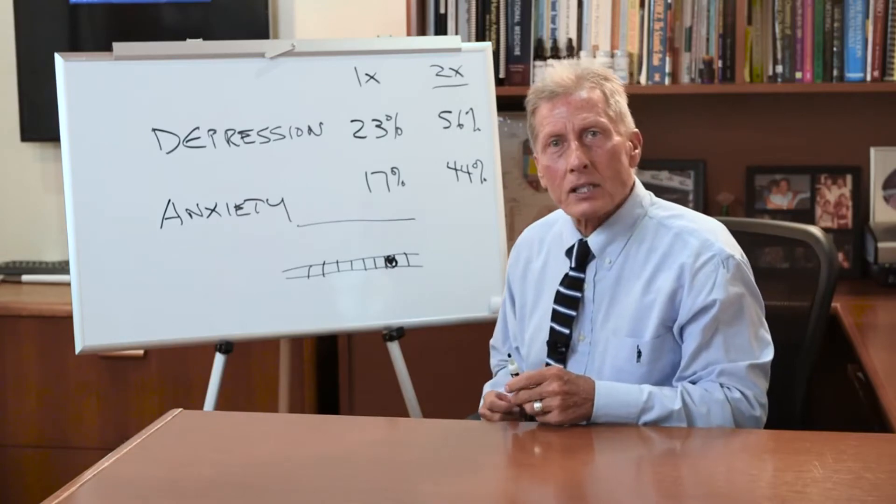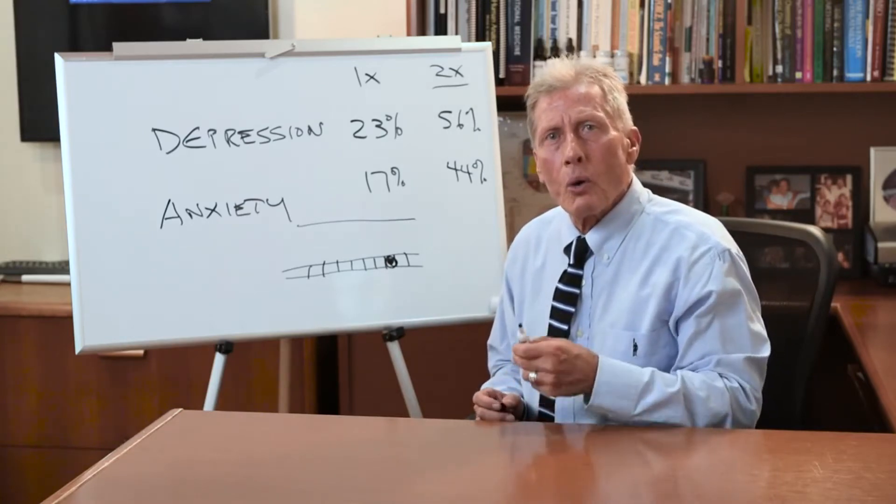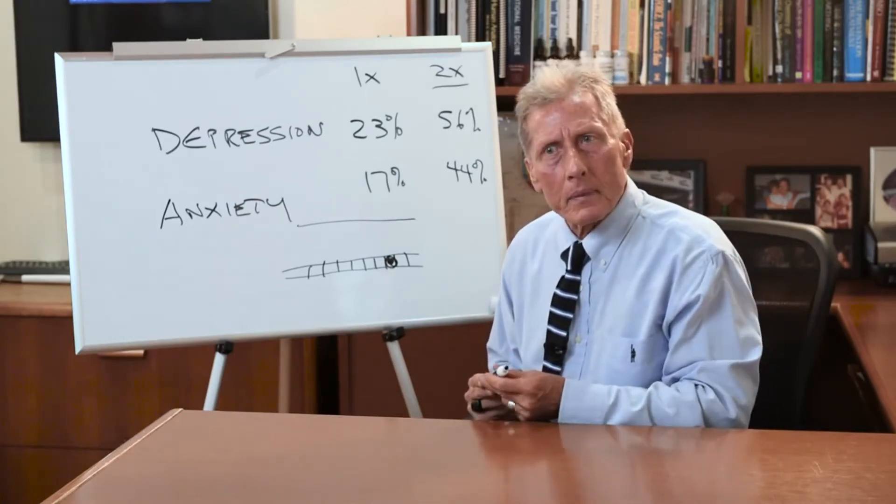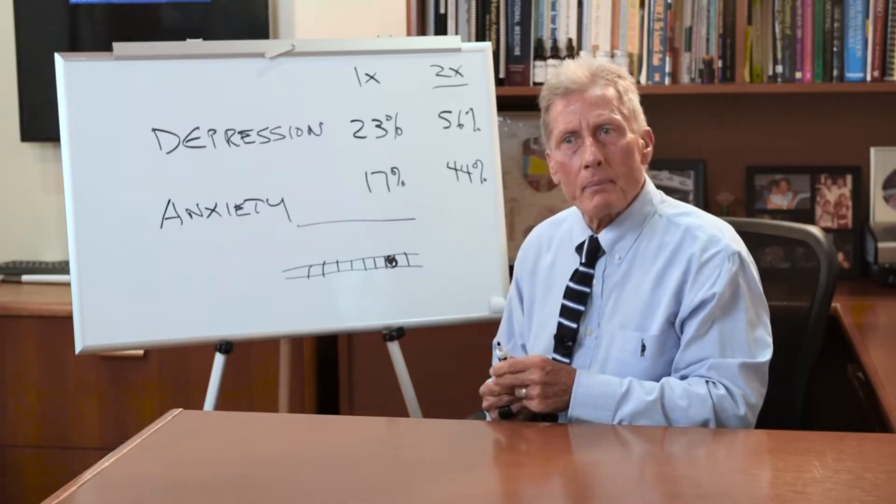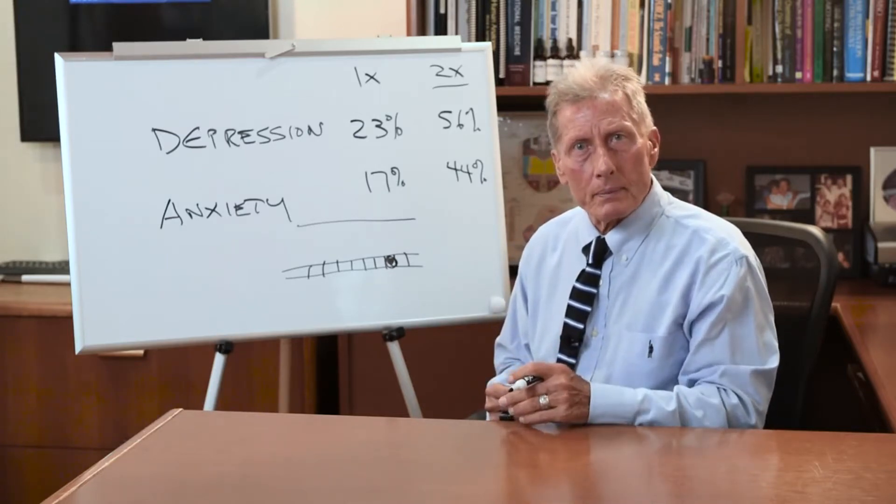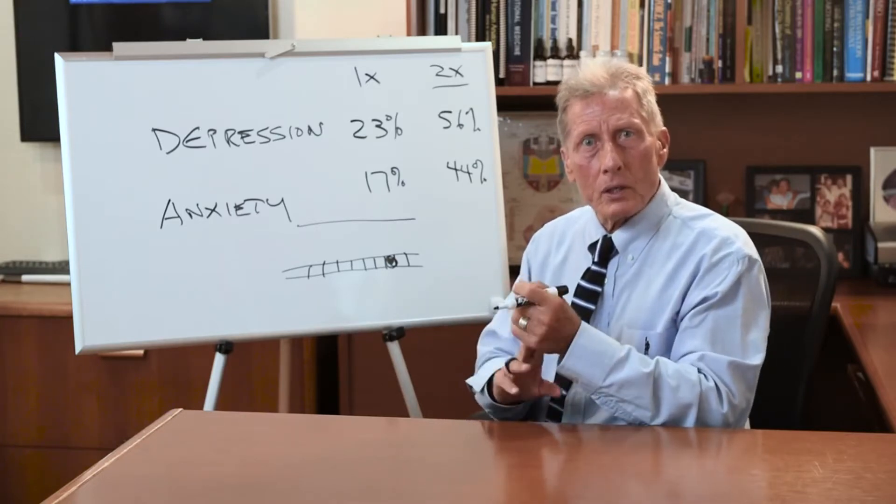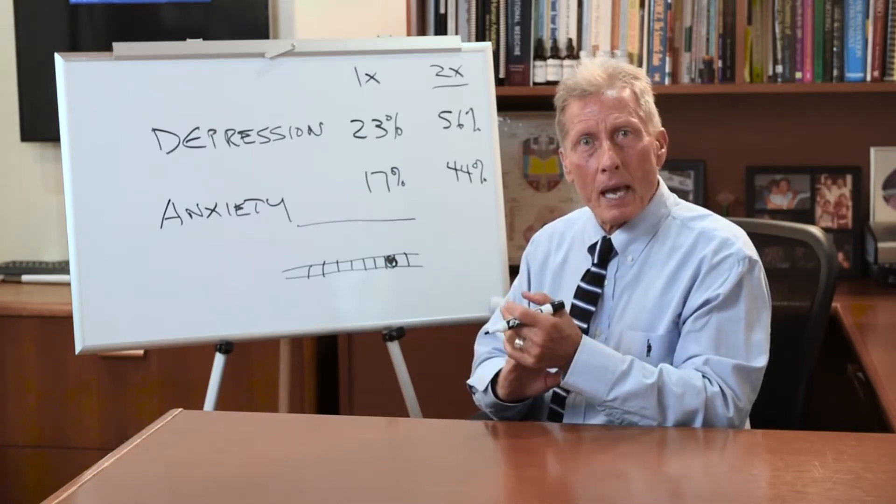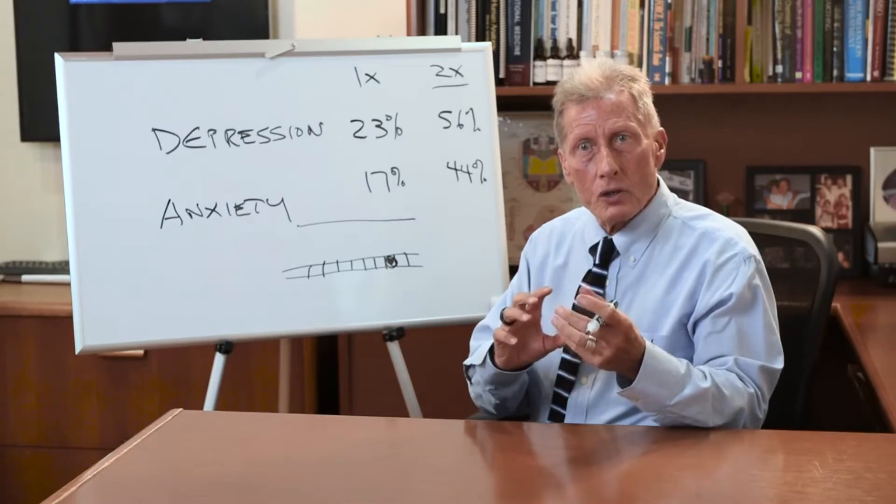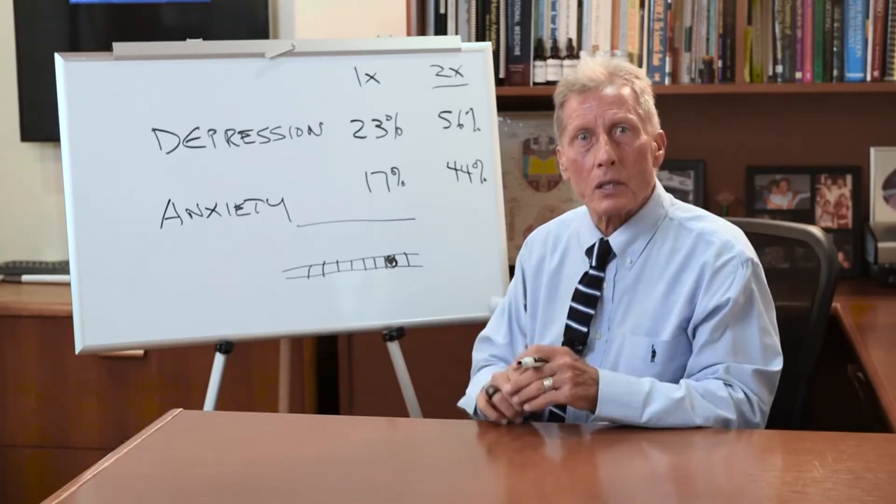It's a cell that makes neurotransmitters. What are neurotransmitters? Like serotonin and dopamine and epinephrine and GABA. These are the things that neurons use to communicate with each other.